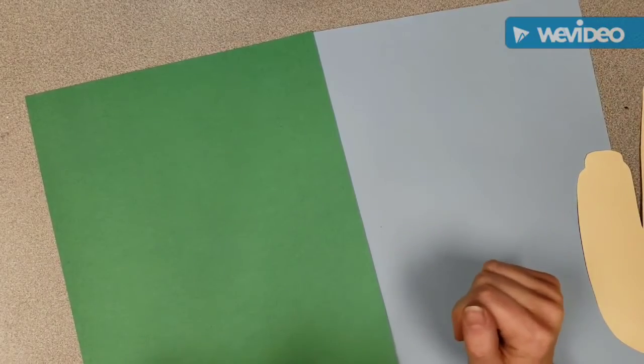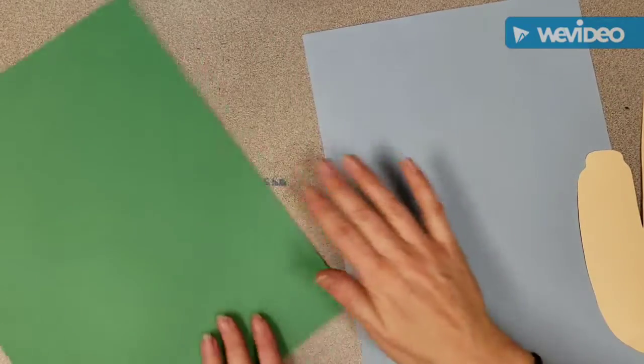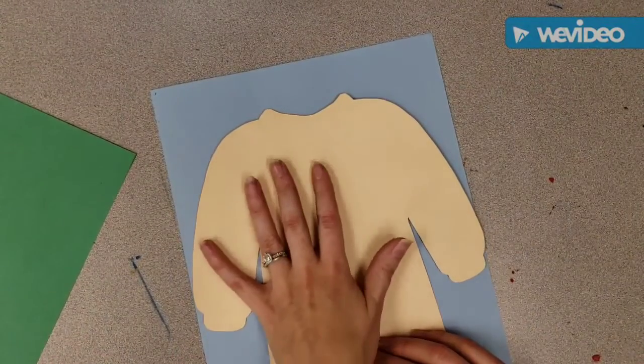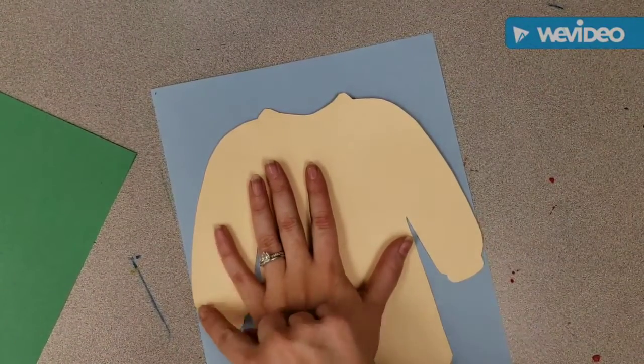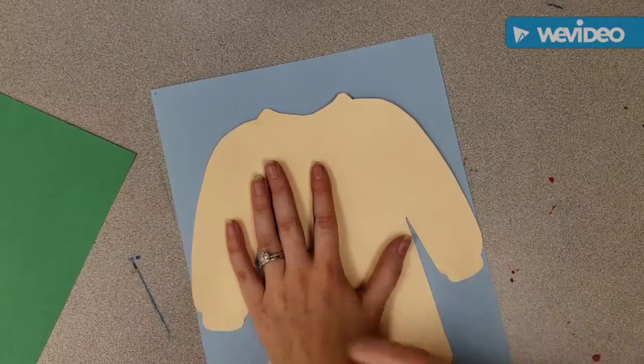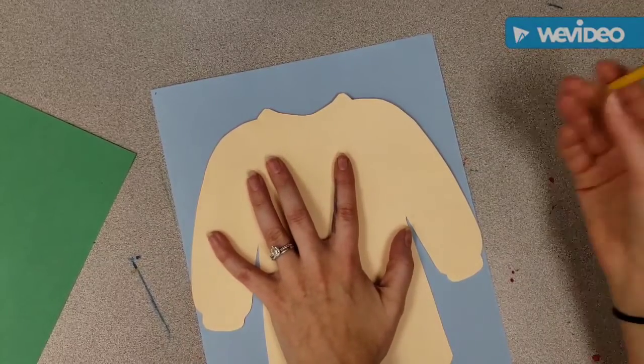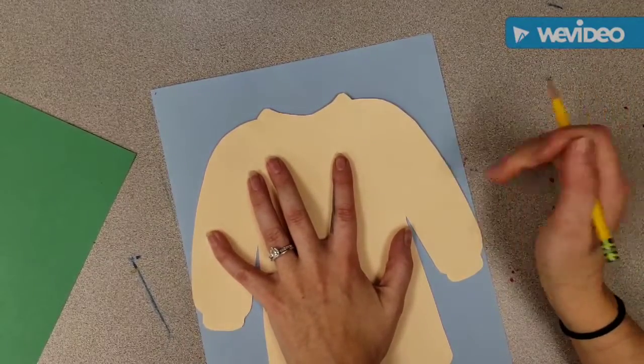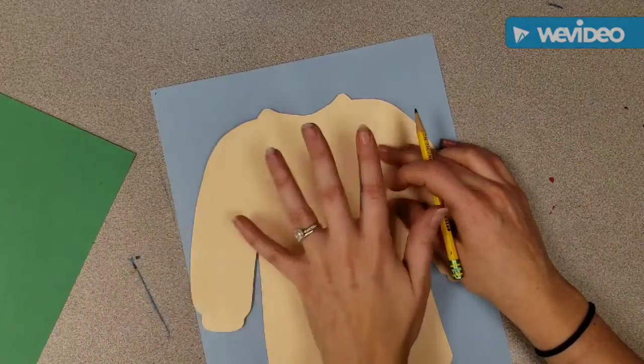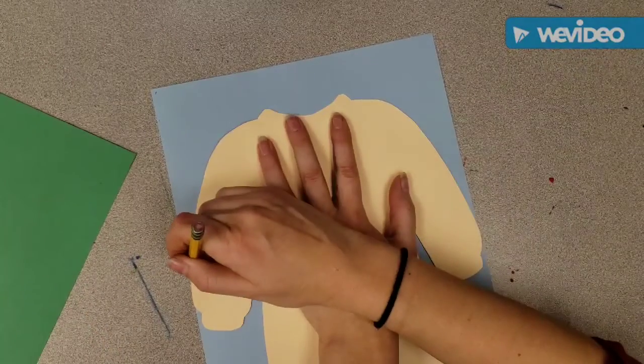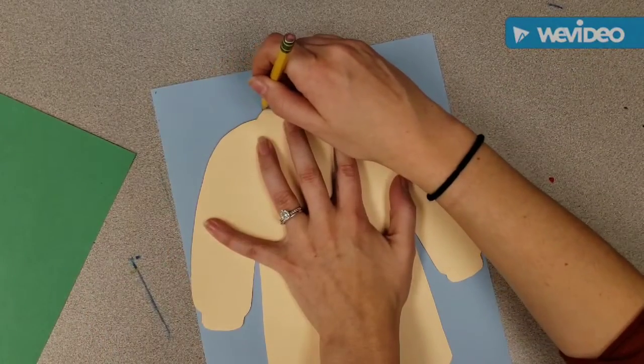You can choose any colors you want, but I think I'm going to use light blue for my sweater. You're going to take your tracer and you're going to make sure it fits on. Now this tracer is a little big so it goes right to the edges of the paper. We have to make sure it doesn't move while we're tracing it. To do that we take one hand and hold it down, we take the other hand and we trace around the edges.